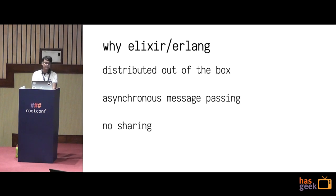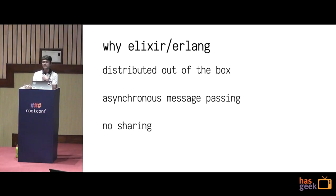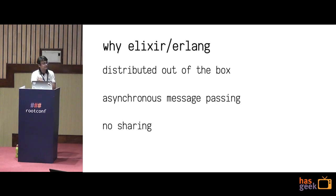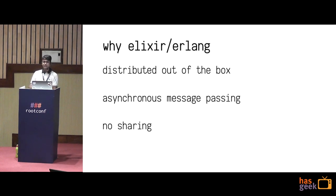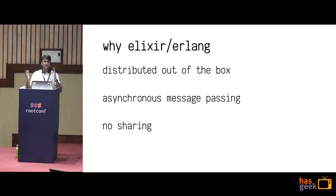So why use Elixir? The very first thing is Elixir is distributed out of the box. You don't have to use any external library. You just write something in your configuration file or just write this one command on your terminal, which I'll show later. And bang, you have a distributed cluster running Erlang nodes in parallel. The second thing is Elixir uses asynchronous message passing across the board. This ensures that your communication mechanism remains the same, whether you are communicating locally to a process running on your own VM or to a different process running somewhere on AWS cloud.